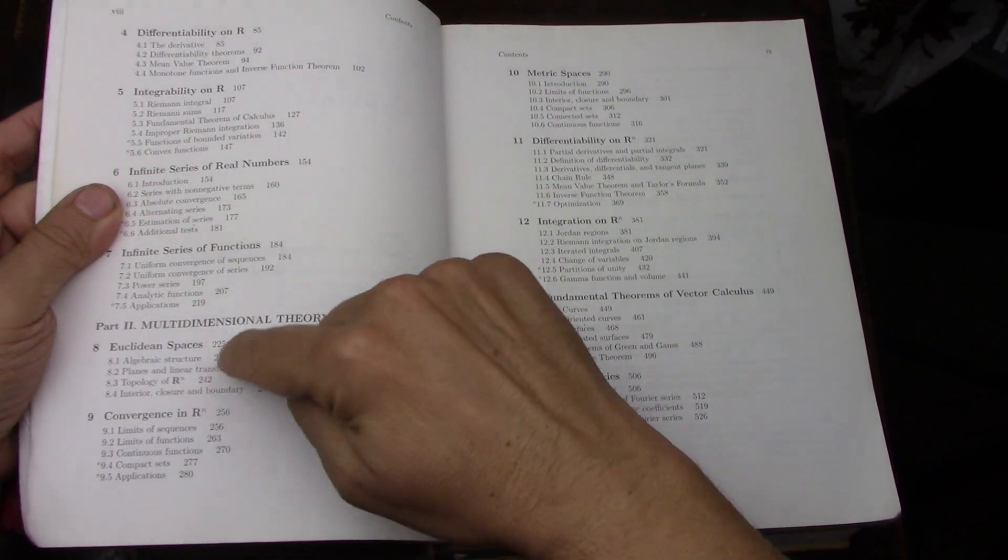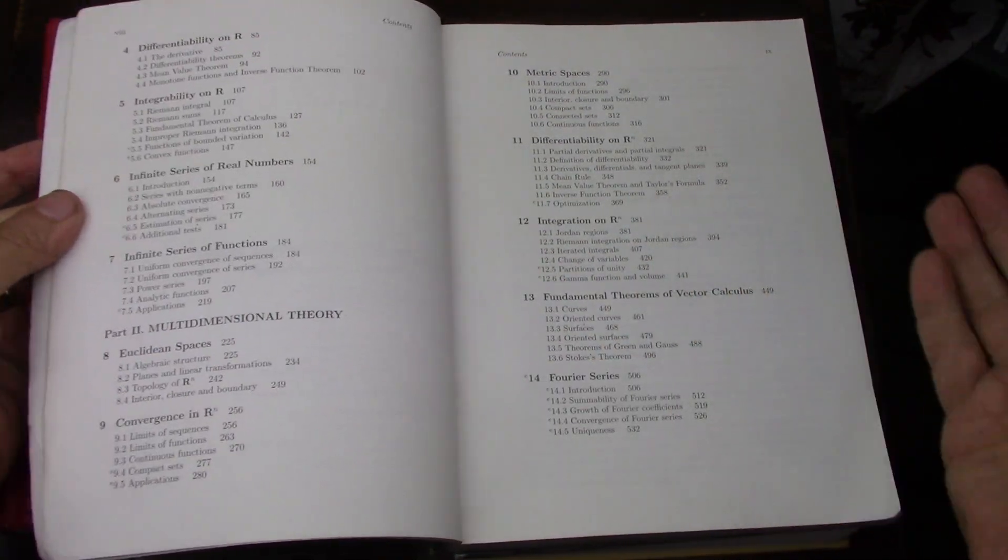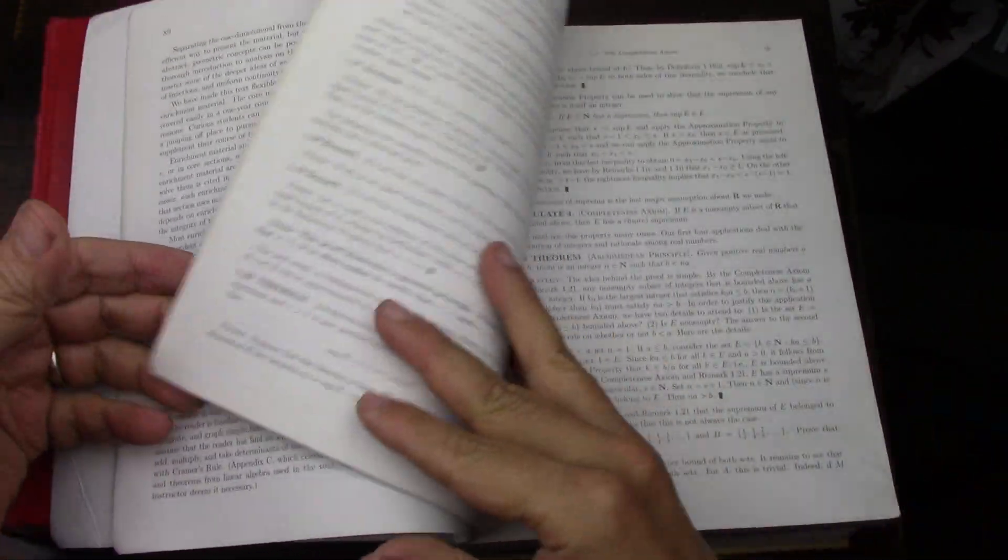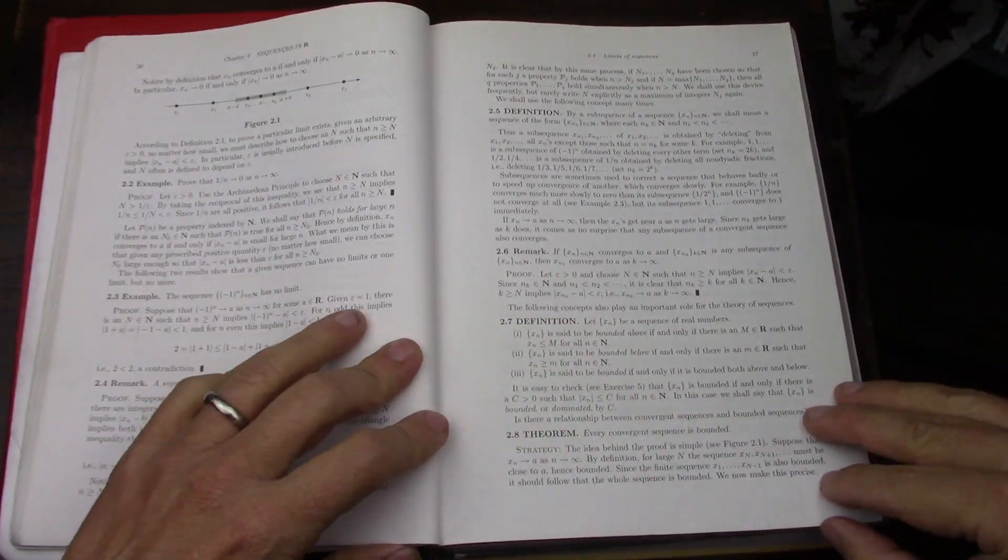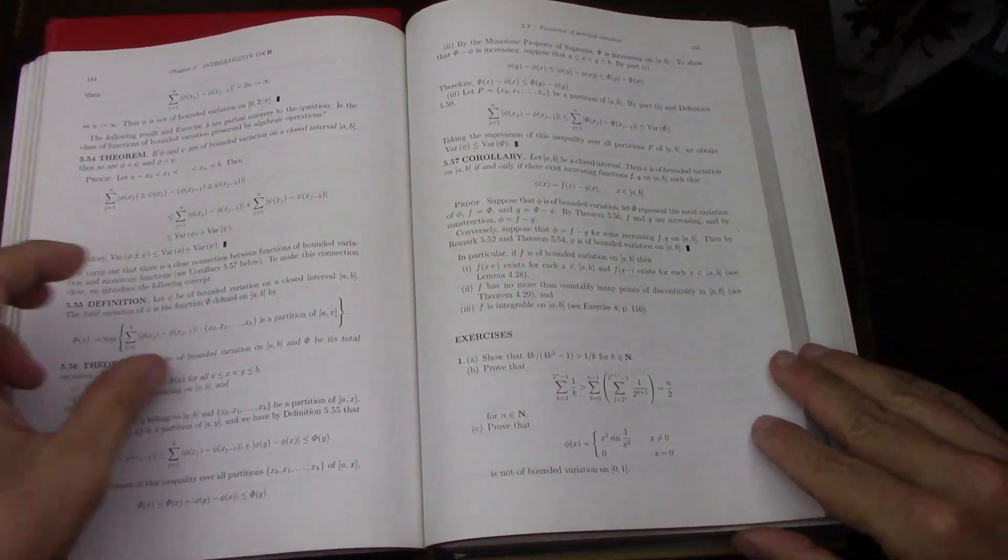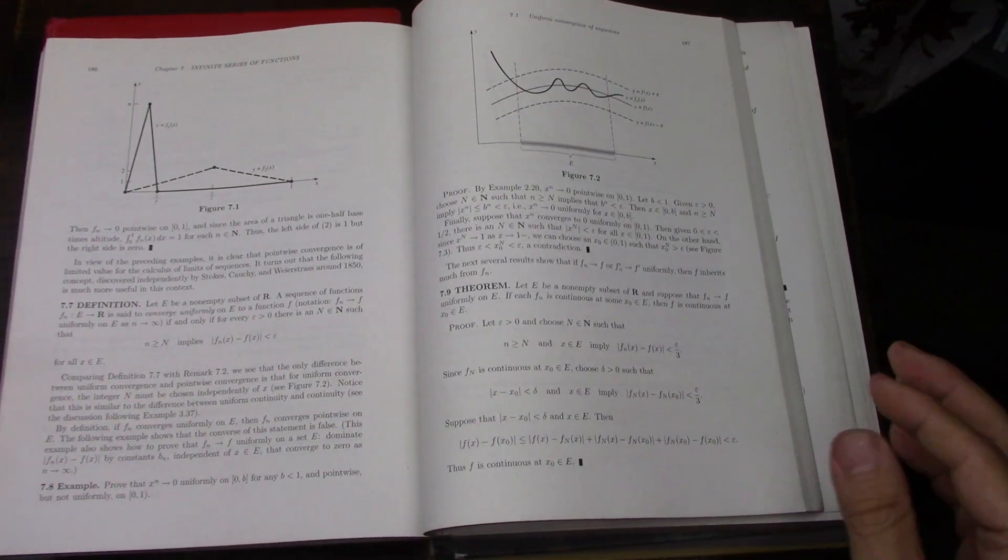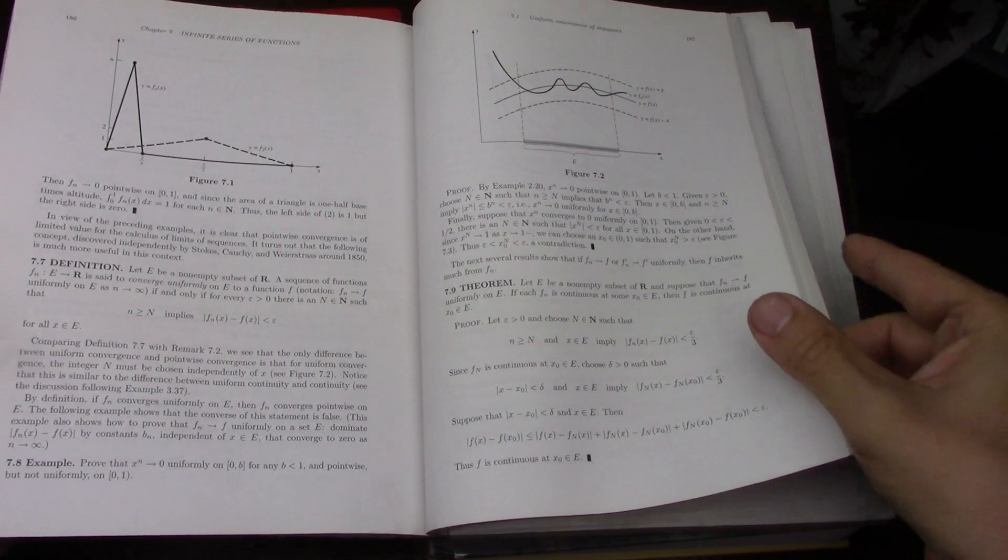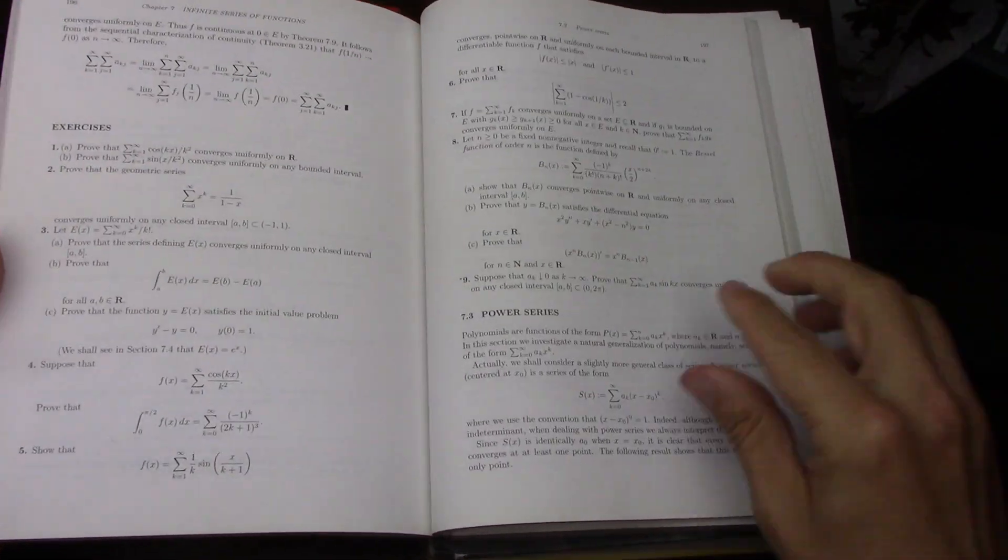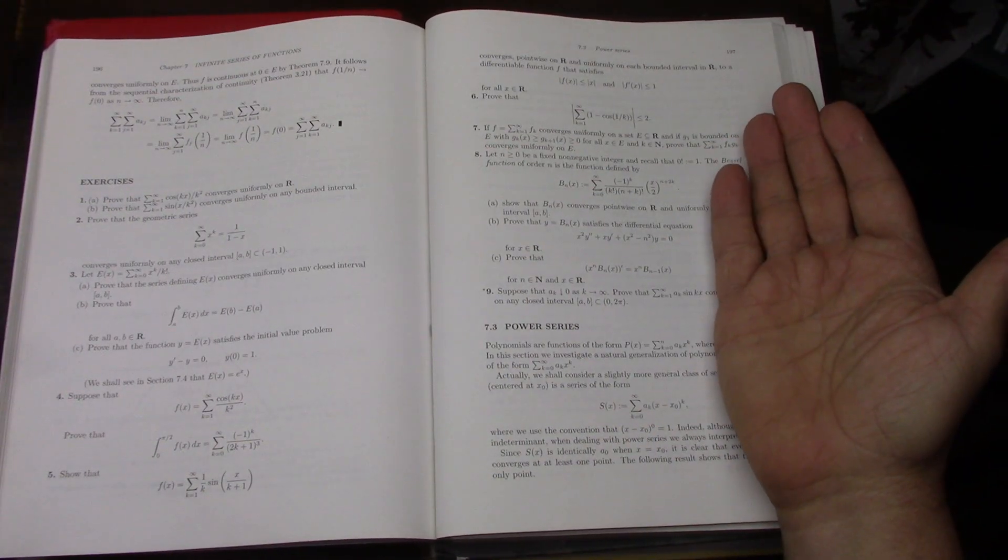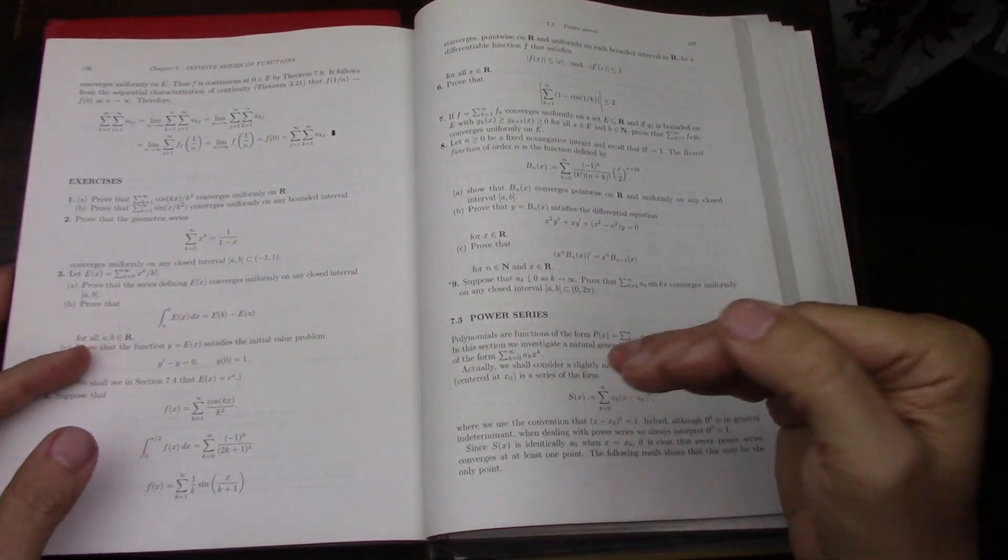Stokes theorem, which I have to revisit. R to the n, Euclidean spaces—great book. If you watch other videos in my channel, you will see many details about this book, so I don't think I want to go into it anymore. There's plenty of videos on my channel about this book, so I'll leave it at that.